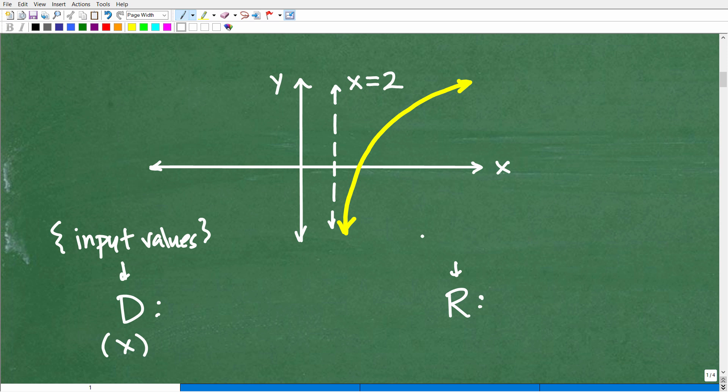And the range is the set of output values. Now, this variable here, or the range, is associated with the Y variable. And it's dependent upon the input variable. So in a function, you plug in input values, and then you generate a set of output values.